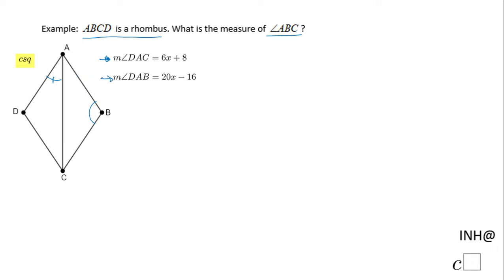A rhombus has a very important property: diagonals bisect opposite angles. So in this case, AC bisects angle DAB, which means this angle here, which is BAC, is congruent to angle DAC.